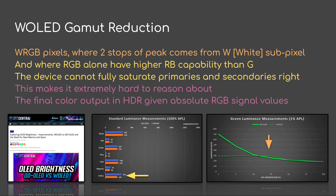W OLEDs have a gamut reduction problem. Due to the WRGB pixels, the two stops of peak typically comes from the W subpixel element entirely. The RGB ratios alone have a separate issue: they typically have higher levels out of R and B compared to G — probably because the W is taking up a lot of the slack from the G. TFT Central found something very interesting in exploring their OLED brightness article: if you look at standard luminance and compare a QD OLED with a W OLED and normalize them, you'll notice that the W OLED has problems in the yellows and magentas, and a little bit in the cyan.